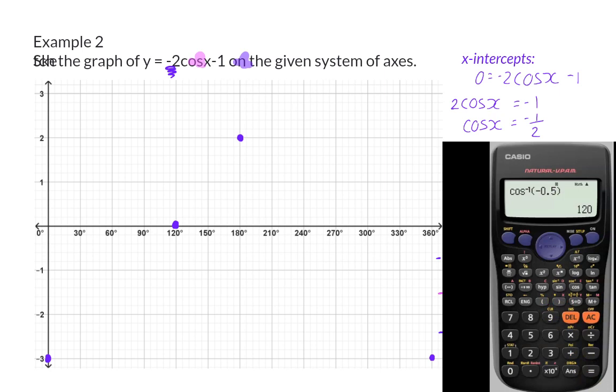Now, we can also make the conclusion that the second x-intercept is at 240 degrees because both the sin and cos waves are perfectly symmetrical.